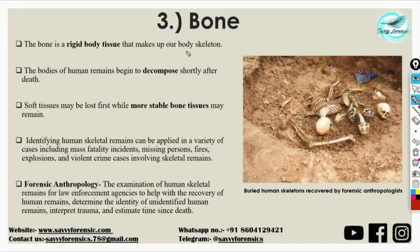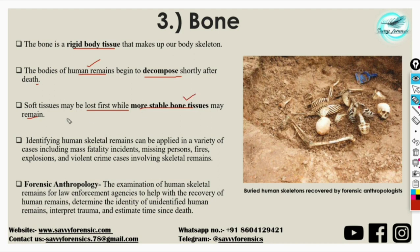Bone is a rigid body tissue that makes up our body skeleton. It is basically a calcified body tissue which makes our skeletal system. We are studying bone in the forensic context because there are cases when we find human remains. There are many conditions where human remains begin to decompose shortly after death and the soft tissues may be lost first, but the more stable bone tissues may remain. As a forensic scientist, we should extract maximum information from the available evidences recovered from the scene of crime.